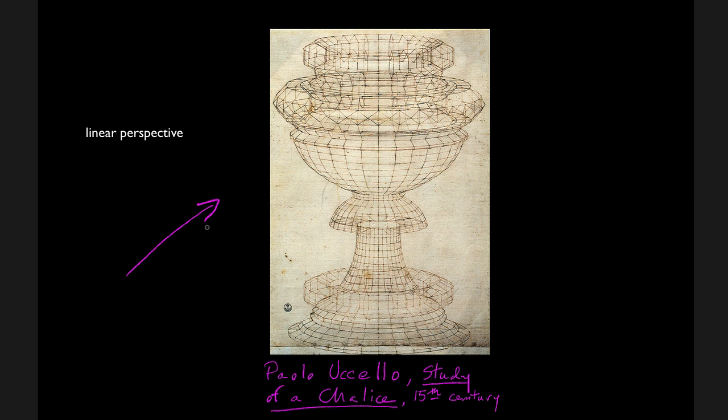Look what even Paolo Uccello was able to do just a few decades after linear perspective was first discovered. So linear perspective is a way of recreating the three-dimensional world on a two-dimensional surface and it's really accurate. Look at this Paolo Uccello study of a chalice.